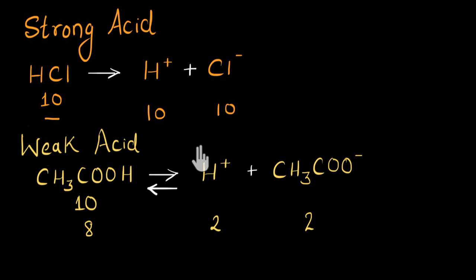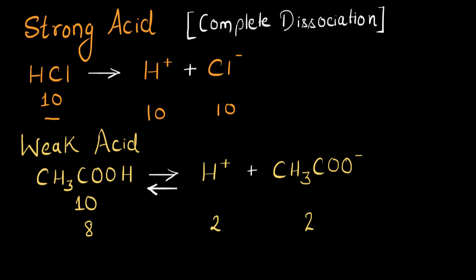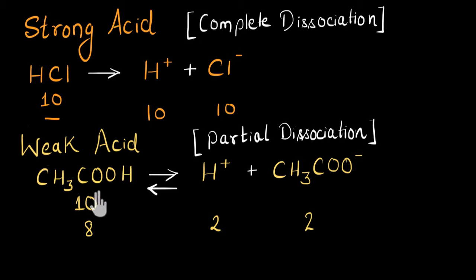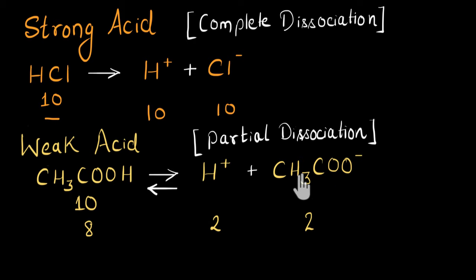So this is the difference between strong acid and weak acid. Strong acids undergo complete dissociation, meaning all the molecules of the acid will dissociate to give us H+ ions and no molecules of the acid will remain in the solution. Whereas weak acids only undergo partial dissociation — only a few molecules of the acid dissociate to give us H+ ions, and that is because the negative ion that forms is very unstable and combines back with H+ to give back the acid.